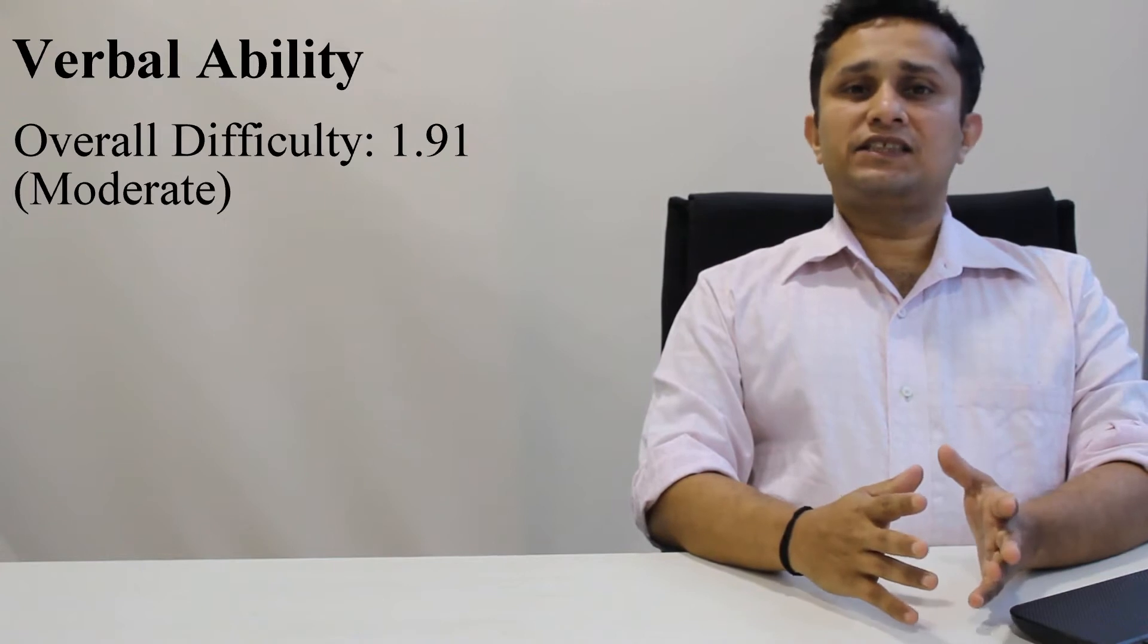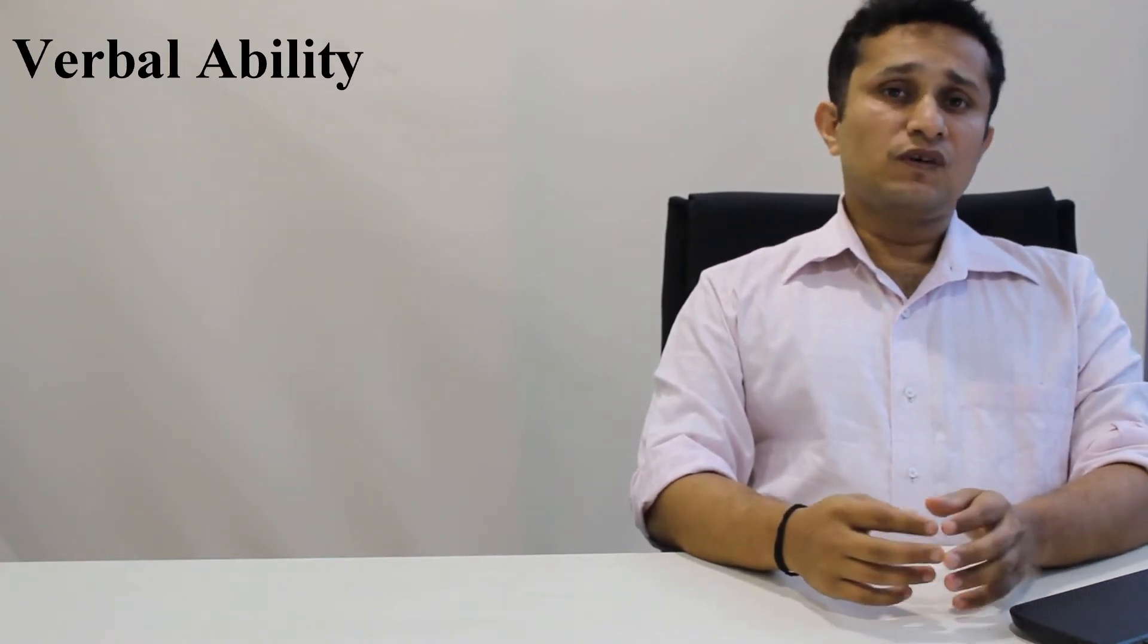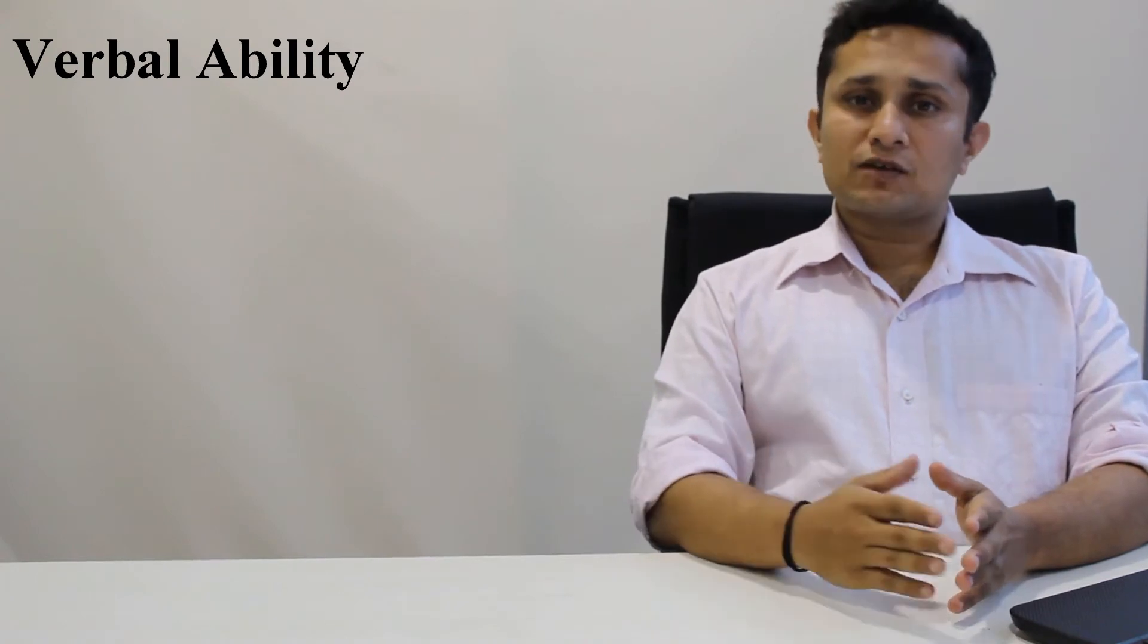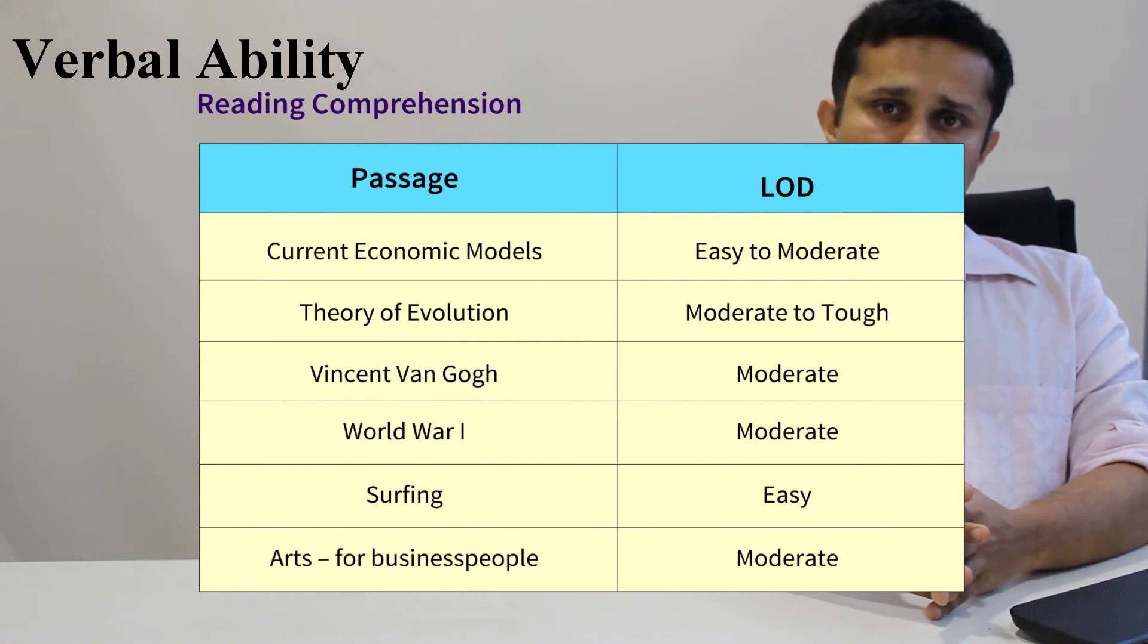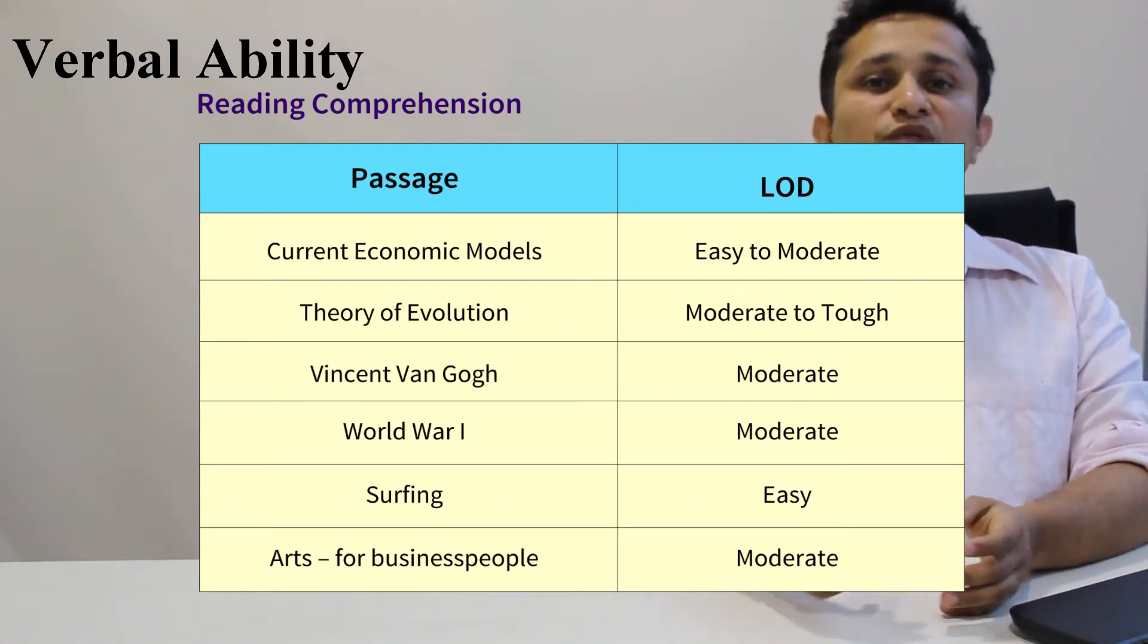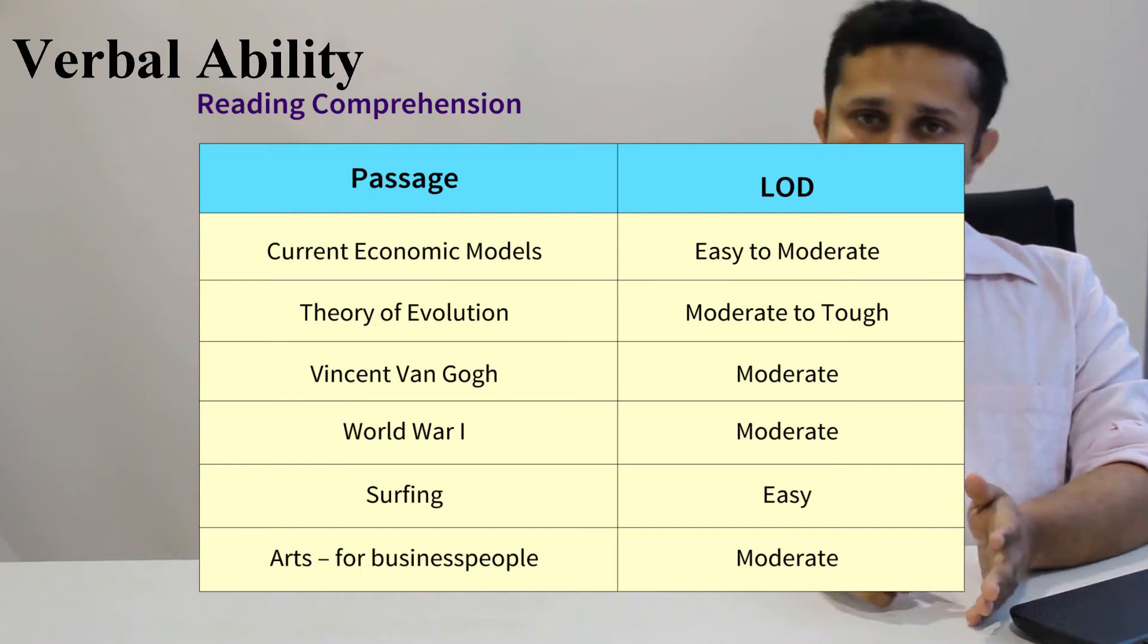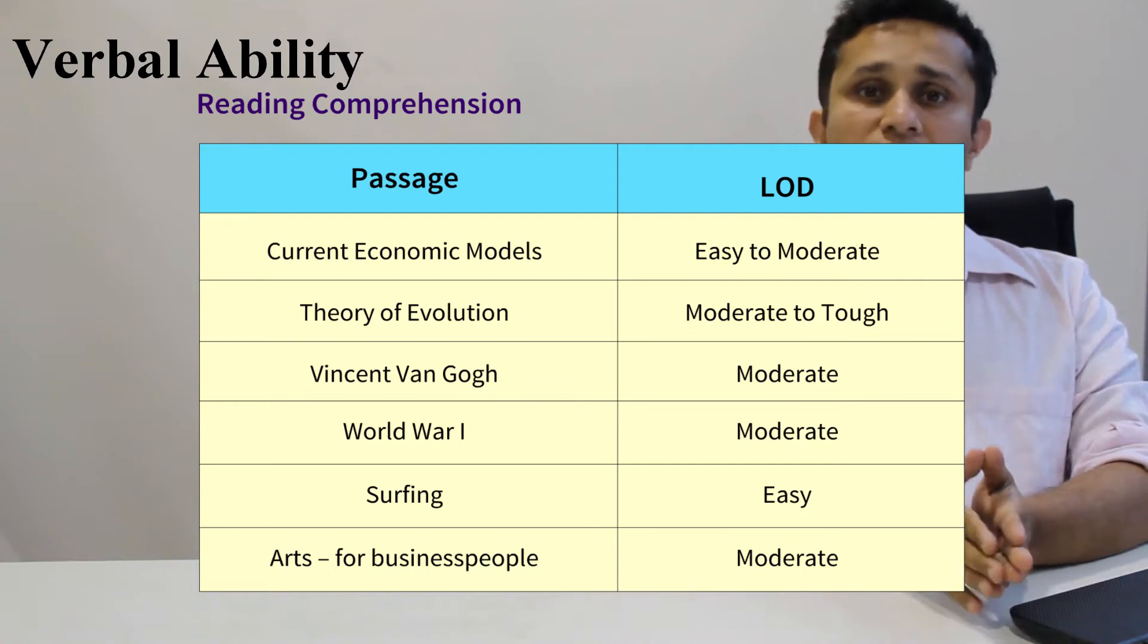As always, this section had 6 RCs in a combination of 2 six-question RCs and 4 three-question RCs plus the 10 numerical entry or theta questions. Let's start with the RCs first. If you observe, these 6 RCs had a broad spectrum of difficulty ranging from easy all the way to moderate to tough RC. So there was an RC of nearly each type as far as the difficulty range spectrum was concerned.